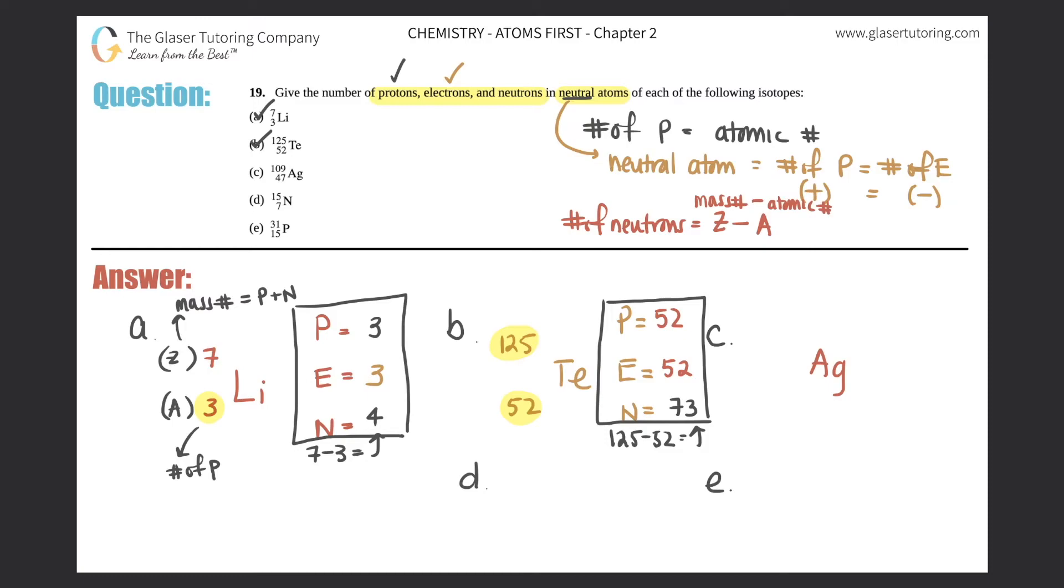Next. Ag, silver, 109, 47, P E N. Protons are on the bottom left-hand corner, so we have 47 protons. This is neutral, so the number of protons equals the number of electrons. So you have 47. And then your neutrons is your mass number, which is 109 minus 47, and that will get you the number of neutrons. So 109 minus 47 is 62. Box that off. That's how many protons, electrons, and neutrons are in this sample of silver, which is Ag.